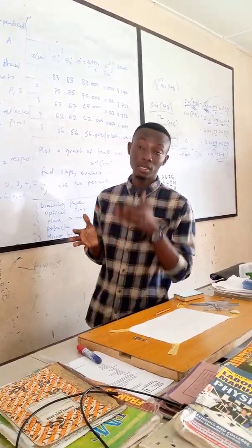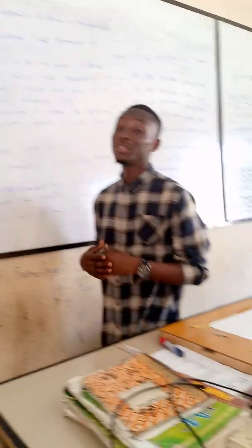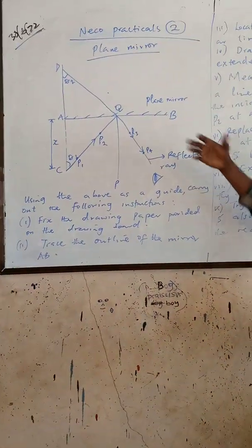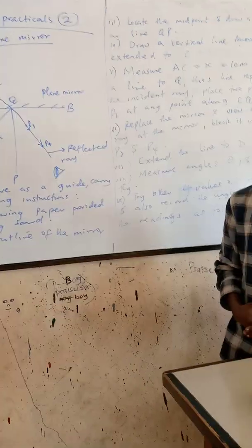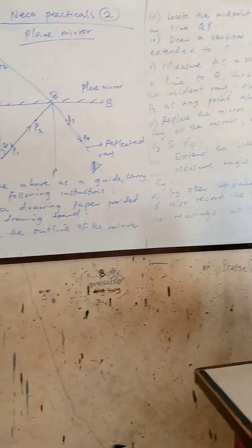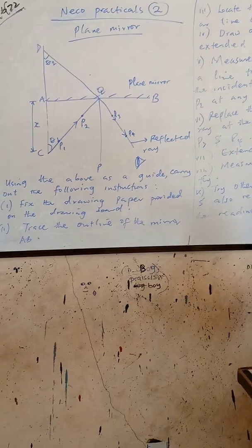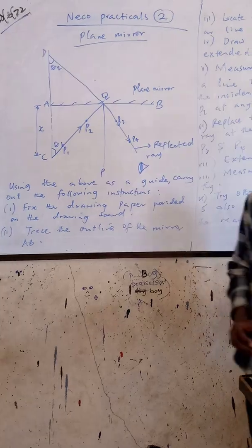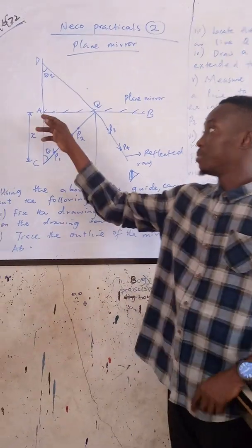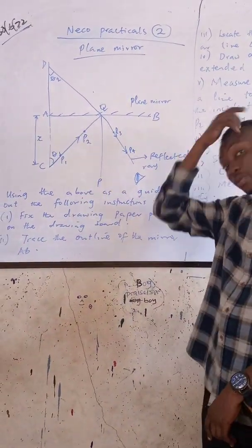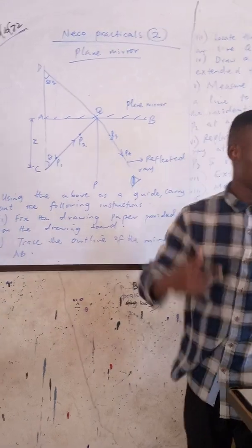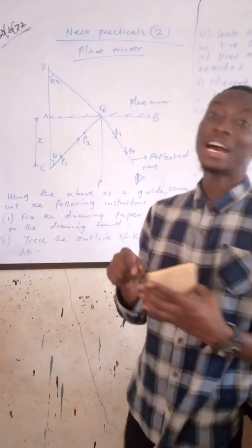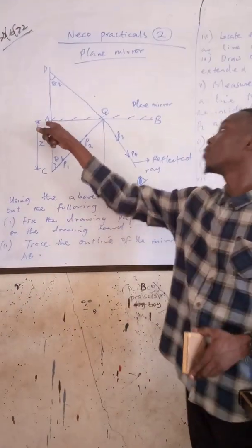From what YX said, from what Philippus said, I was able to draft out a question. This is the illustration of the diagram we are going to use to explain what we will do in the practical. I'm going to explain the diagram before we do it practically. The line AB represents my mirror, and I'm going to place my mirror on my drawing paper and trace the outline. The outline is labeled AB.